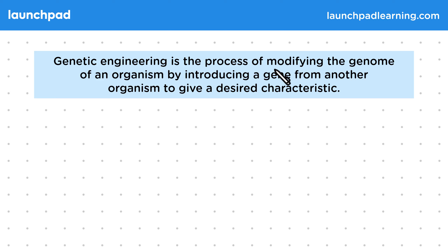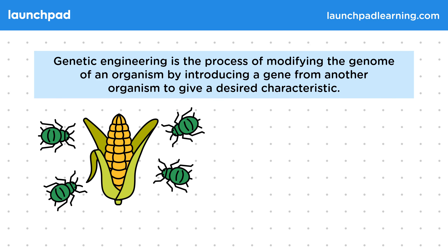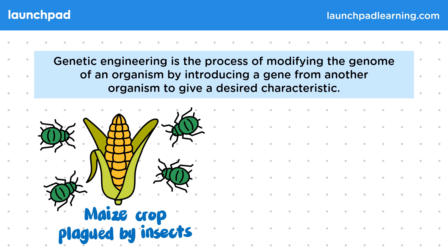Genetic engineering is the process of modifying the genome of an organism by introducing a gene from another organism to give a desired characteristic. For example, you might have a maize crop which is plagued by insects that are eating it. To reduce the need to spray pesticides, farmers want to create an insect-resistant maize.